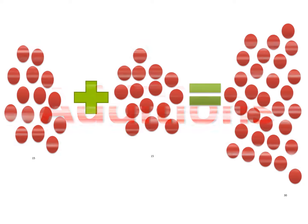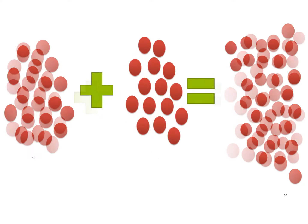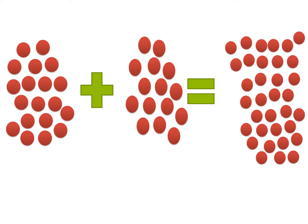Additions. 15 plus 15 equals 30. 19 plus 15 equals 34.